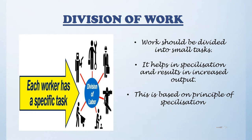The first principle is division of work. According to Fayol, your work should be divided into small tasks or small units so that each employee within your organization should be trained in the job they have to perform. This process of breaking tasks into small groups and training employees for that assigned task is called division of labor.